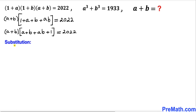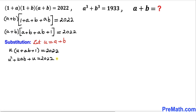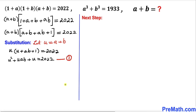Let's make a substitution to simplify. Looking at a+b, let u = a+b. Then our equation becomes u times (u + ab + 1) = 2022. Distributing u across the board gives u² + u·ab + u = 2022. Let's call this Equation 1.